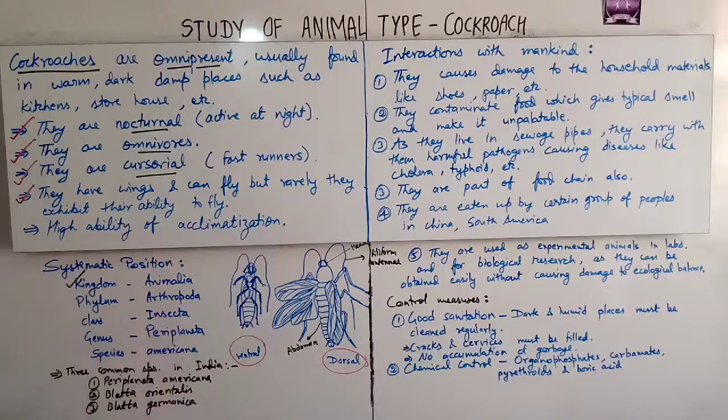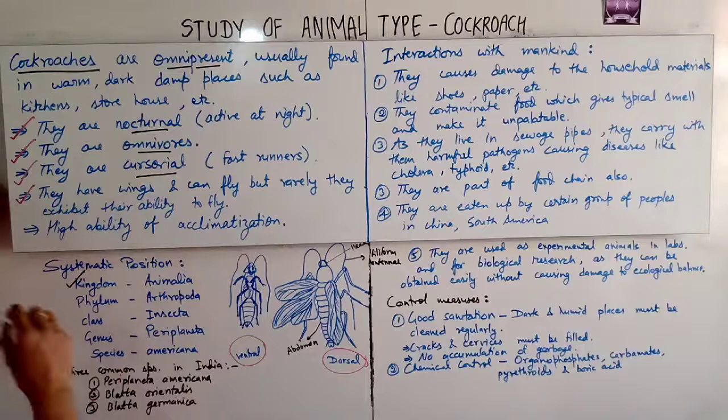Genus is Periplaneta — because they have straight wings, are nocturnal, and their mouth is of the chewing type. Species is Americana, because they originated from the USA. So the systematic position is: Animalia, Arthropoda, Insecta, Periplaneta, Americana.